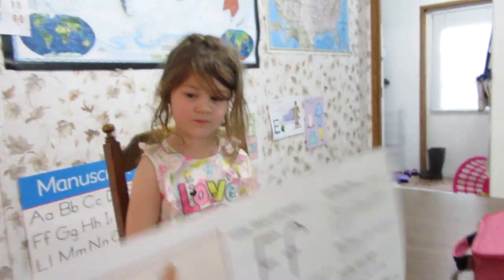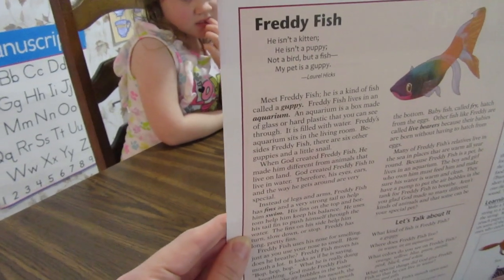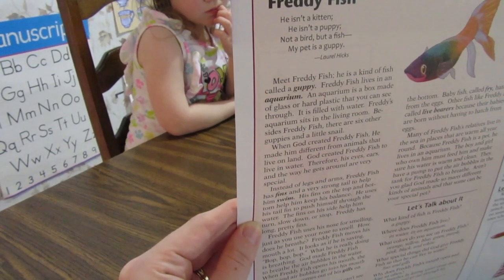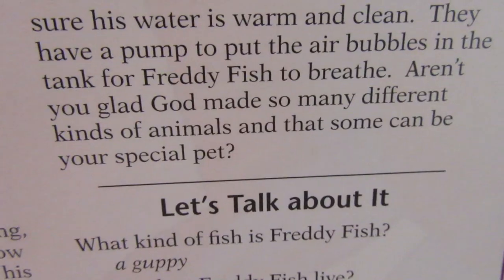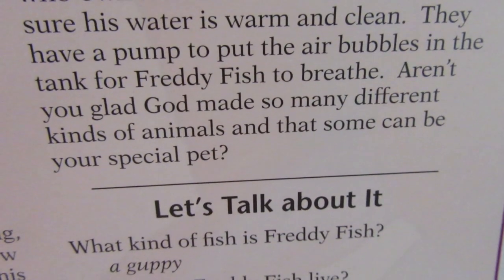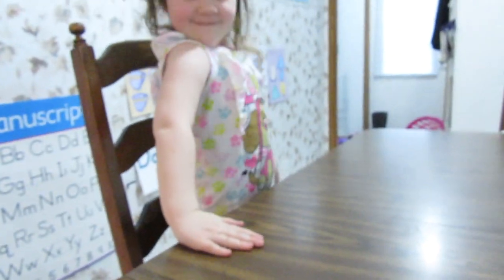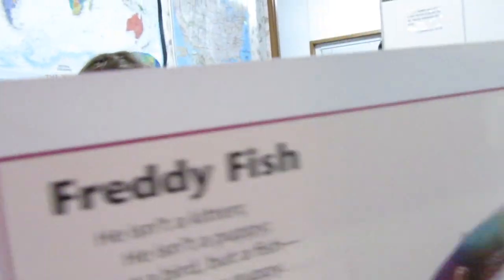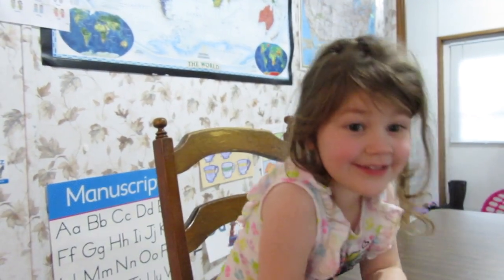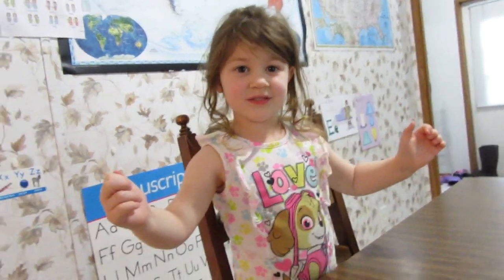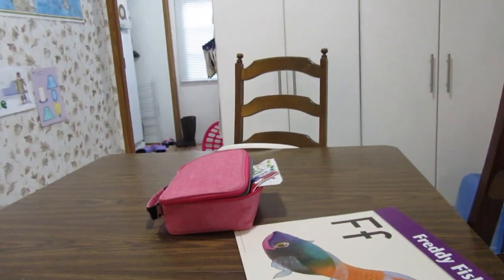So you watch Freddy Fish as I talk about him. Meet Freddy Fish. He is a kind of fish called a guppy. Freddy Fish lives in the aquarium. Aren't you glad God made so many different kinds of animals that some can be your special pet? Aren't you glad we have pets? Maybe one day we can get a guppy — won't that be nice? I want a little dog that stays little and a fish. So we did Freddy Fish and we talked about Freddy Fish.